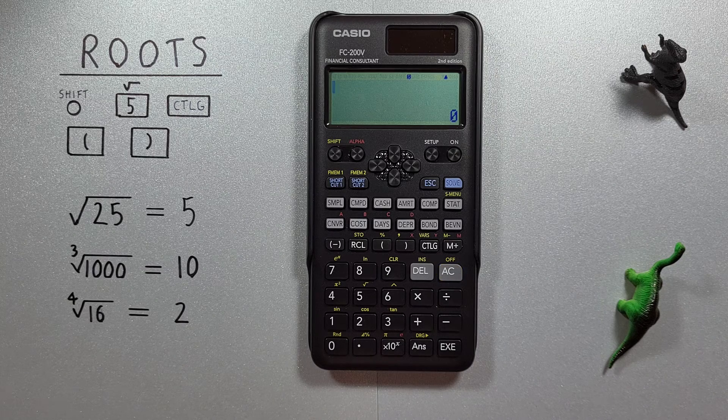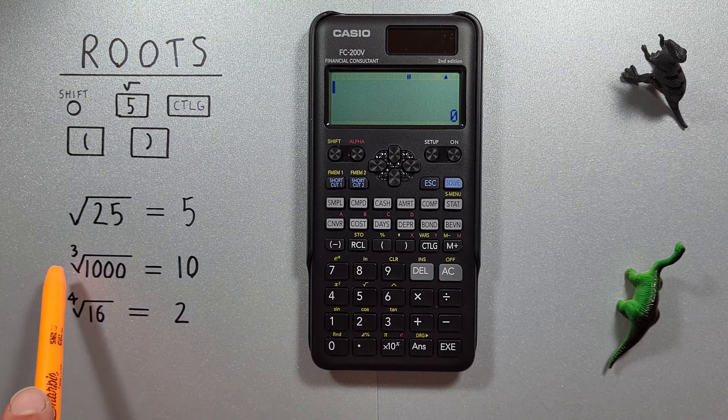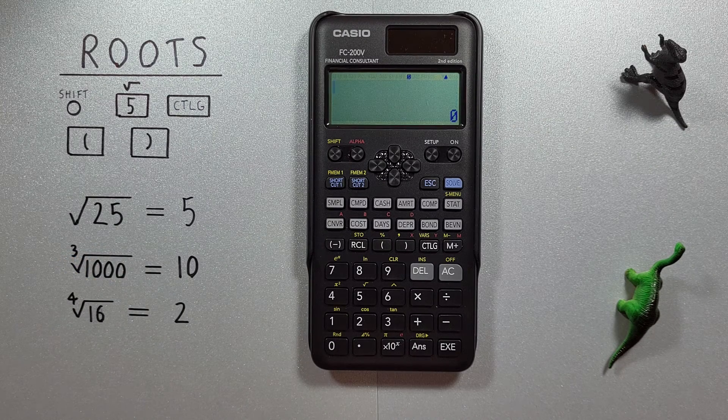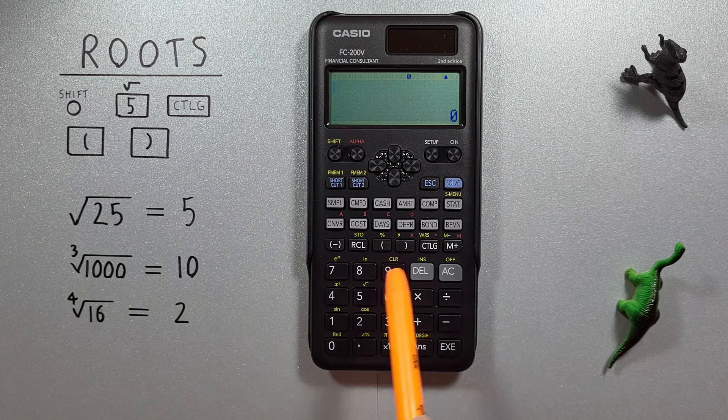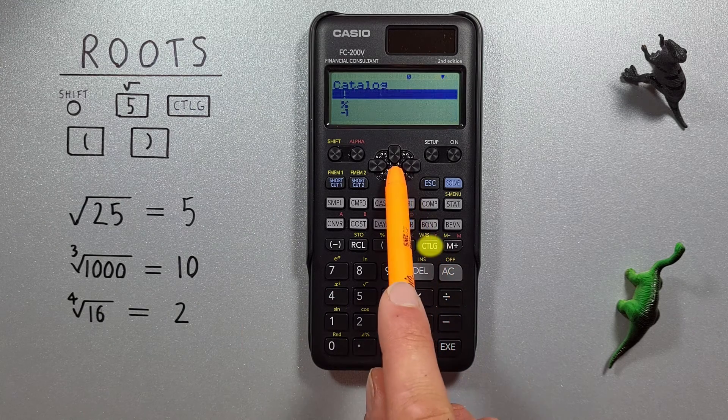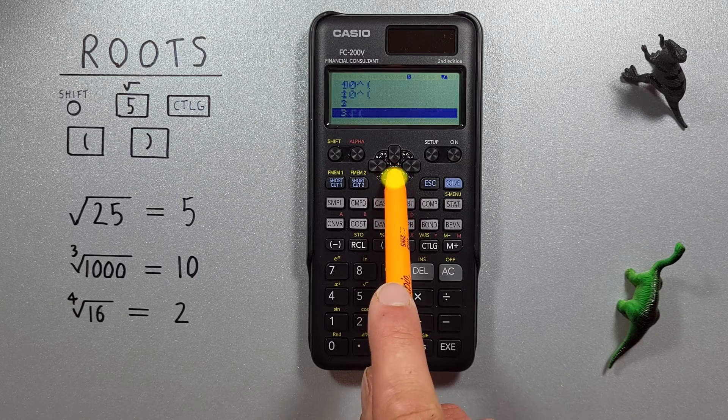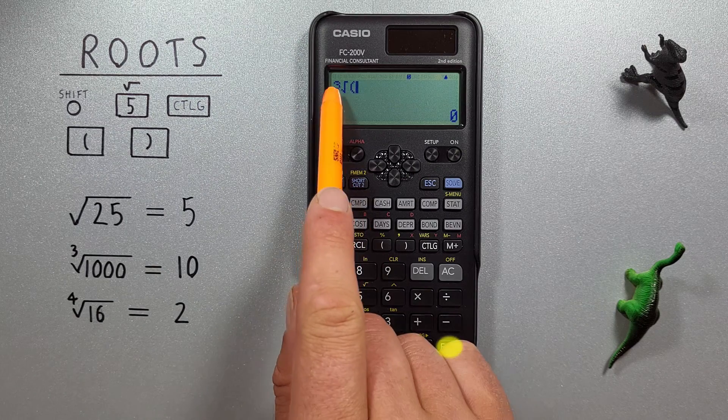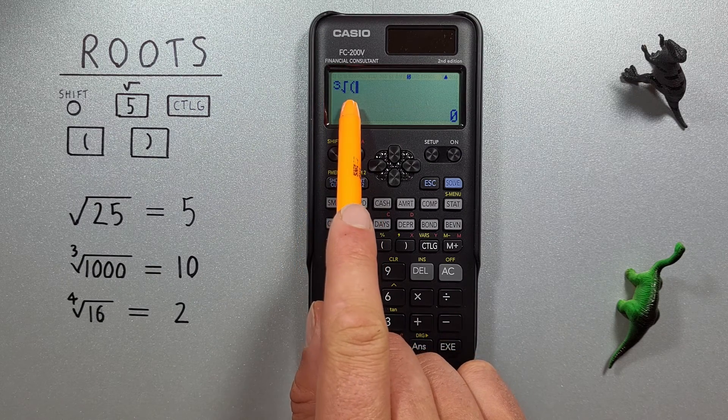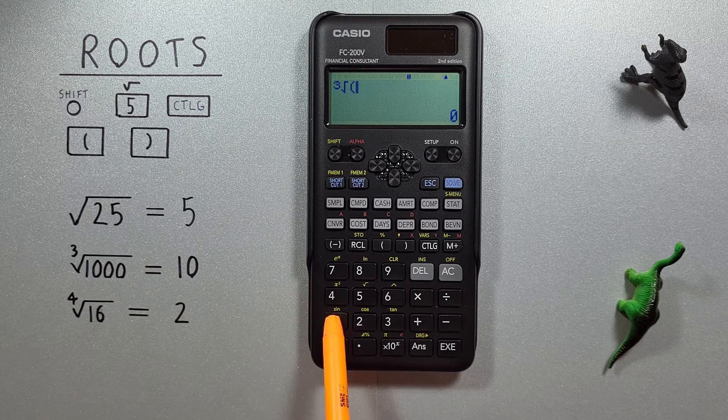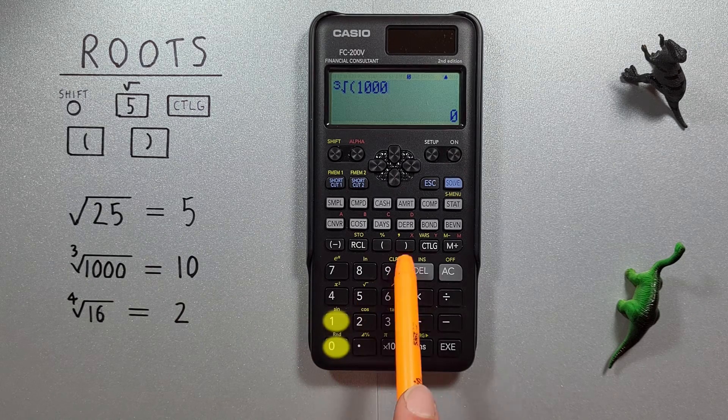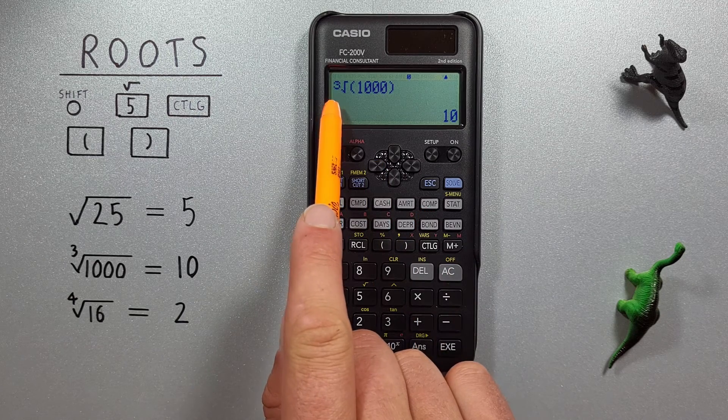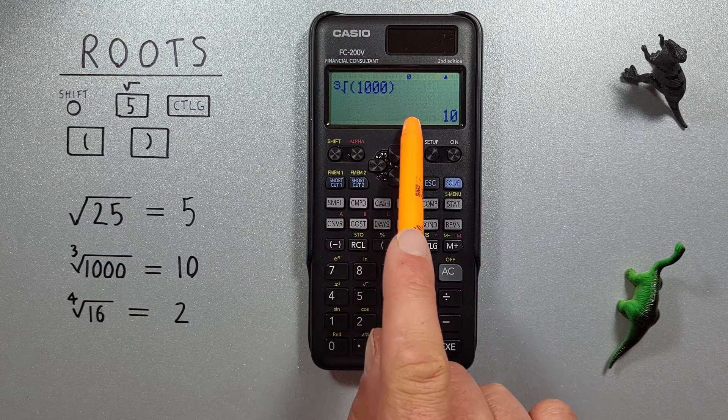What if we want to cube root a number? Like for example, find the cube root of 1000. To do this, again, we use the catalog key. So we press catalog, scroll down until we see cube root, select that, and we see the cube root symbol on our screen. We enter the 1000, close our bracket, and hit exe. And we see the cube root of 1000 is equal to 10.